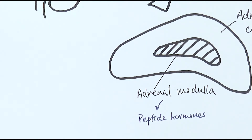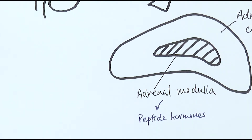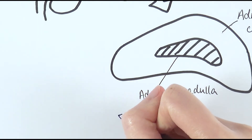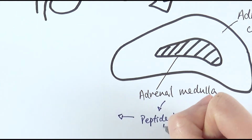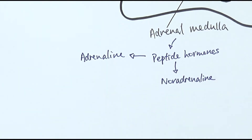In the case of the adrenal medulla, it can release peptide hormones when stimulated by the sympathetic nervous system. This usually comes into play during a stress response. There are only two types of peptide hormones you need to know, and you may already be familiar with them: adrenaline and noradrenaline.